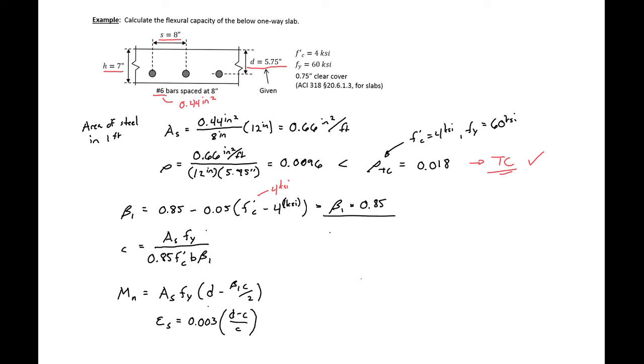So then we can find our C. We're going to find our C using our area of steel per foot. So we have 0.66 inches squared per foot times 60 KSI divided by 0.85 times 4 KSI concrete times our B. We have a 12 inch width. Remember, we're looking at a one foot strip and our beta 1 is 0.85. So we'll find our C to be 1.14 inches.